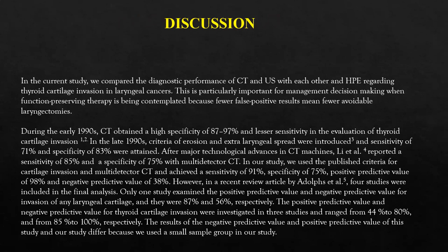During the early 1990s, CT obtained a high specificity of 70-80% and lesser sensitivity in evaluation of thyroid cartilage invasion. In the late 1990s, criteria for erosion and extra-laryngeal spread were introduced, yielding a sensitivity of 71% and specificity of 83%. After major technological advances, sensitivity of 85% and specificity of 75% with multi-detector CT were reported.